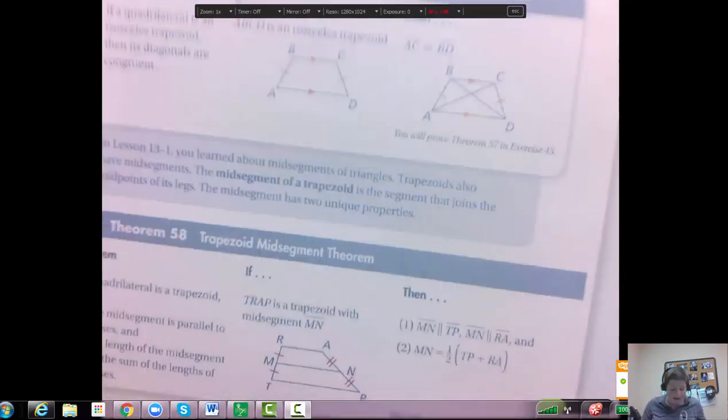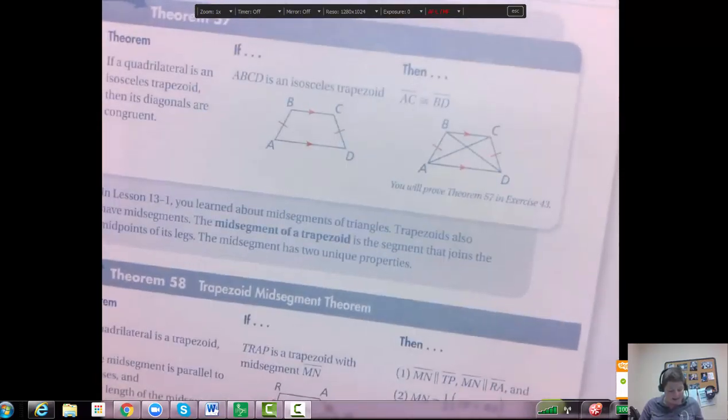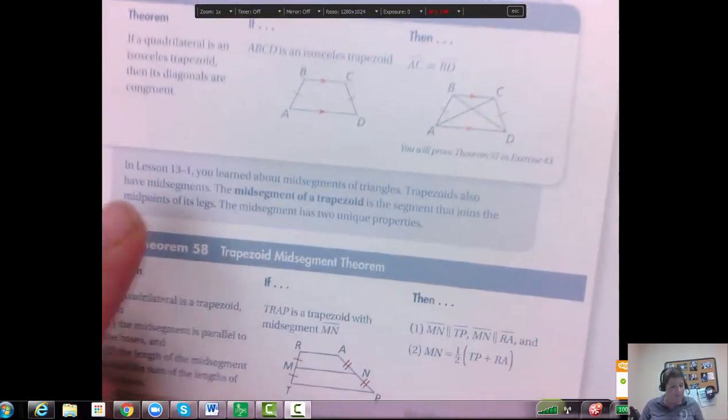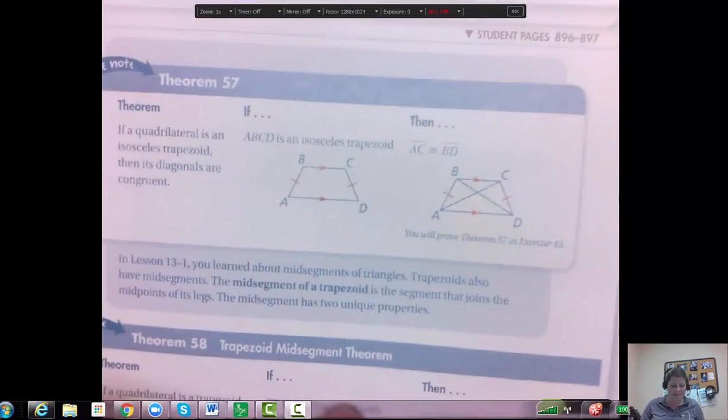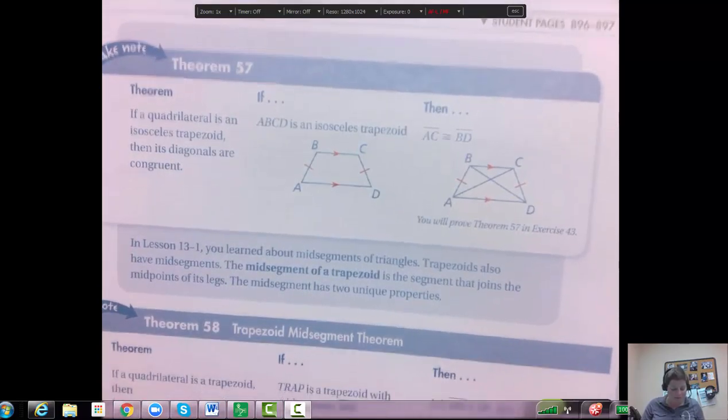Then the next theorem says all right, one other thing about isosceles, or two more, excuse me. I guess this is the last one about isosceles, but there's two more about trapezoids.